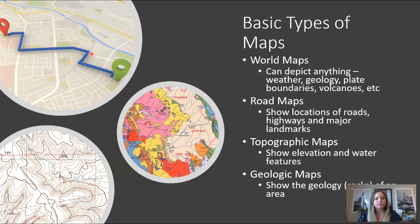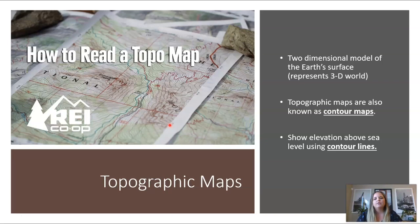And then we've got topographic maps, which are really useful for hiking or even mapping geologic features. So they show elevation and some water features. And then geologic maps will show you the geology or the rocks of an area. Down here on the bottom left, we have a topographic map example, and then here in the center, we have a geologic map example.